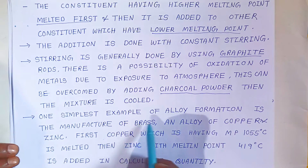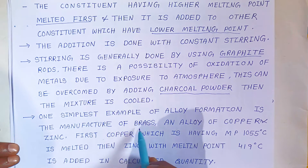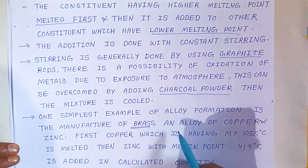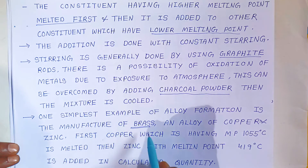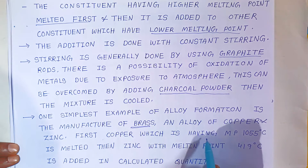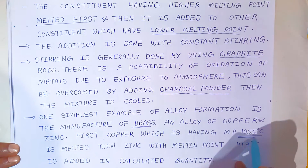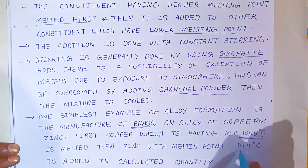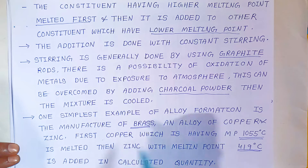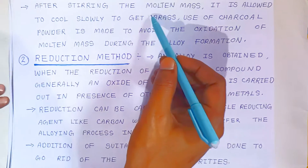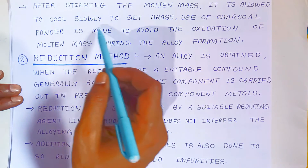One simplest example of alloy formation is the manufacturing of brass by fusion method. Brass is an alloy of copper and zinc. First, copper, which has a melting point of 1055°C, is melted. Then zinc metal, with a melting point of 419°C, is added in calculated quantity. After stirring the molten mass, it is allowed to cool slowly to get brass.